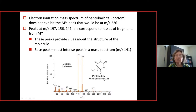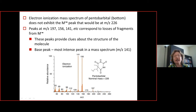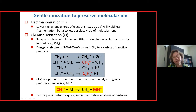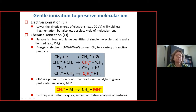A small molecule like pentobarbital (226 Da) under electron ionization gives a spectrum where the 226 Da molecular ion peak is absent — it has completely fragmented — though the fragments do serve as a fingerprint. To obtain a molecular ion, one can reduce electron energy (reducing sensitivity and fragmentation) or turn to chemical ionization.